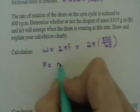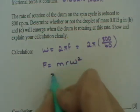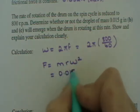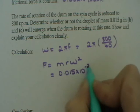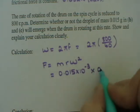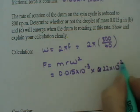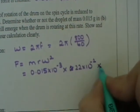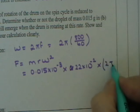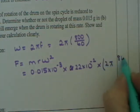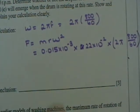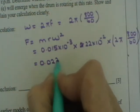F is equal to mr omega squared. And that gives you 0.015 by 10 to the minus 3 again because it's in grams. Radius is 22 cm. That's 22 by 10 to the minus 2. And we're multiplying by our new angular velocity. 800 over 60 squared. So that gives you 0.023 newtons.